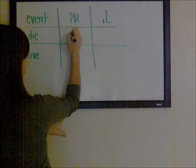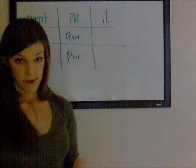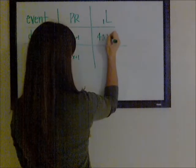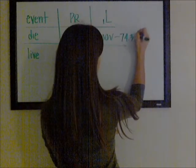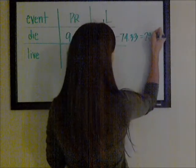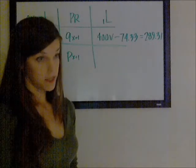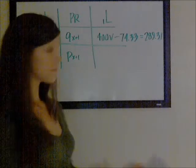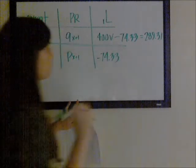If you die, the probability is qx+1, and you receive the benefit of 400 paid at the end of the year, discounted back one period, less the premium received at the beginning of the year of 74.33. With an interest rate of 10%, that gives a loss value of 289.31. If you live, with probability px+1, you don't have to pay out a death benefit, but you did collect the premium, so the loss is negative: −74.33.